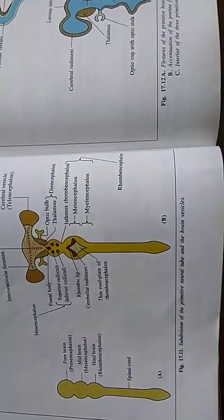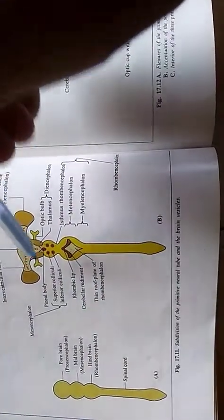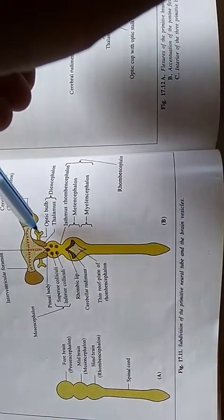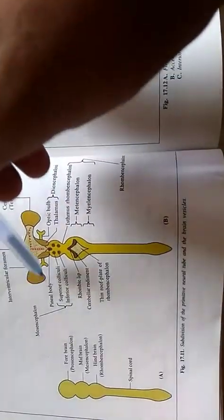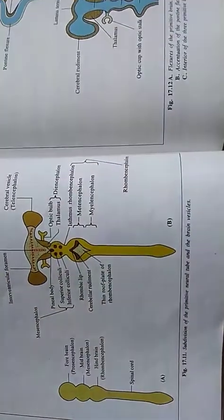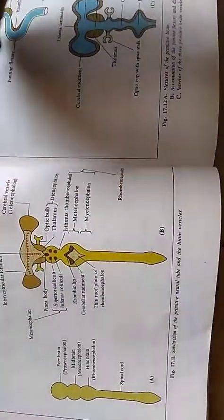The lateral wall of forebrain vesicle shows two evaginations known as optic bulbs. After some time, the ventrolateral part of the wall of forebrain vesicle shows another two evaginations which forms the cerebral rudiments.